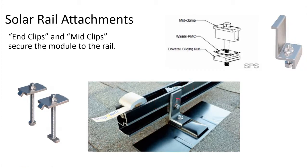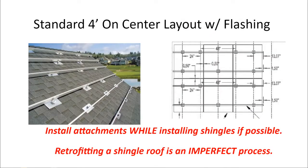A rail is attached to the L-foot and solar panels are clamped down to the rail using mid clips that space and clamp the panel between two panels, and end clips that secure the module frame on the very end of the rail. Additional components help with grounding and splicing of the rail. Pro installers will stagger the L-foot attachments to hit every rafter across the roof, with consideration to the maximum rail span between attachments and wind and load considerations that might require less than the maximum span.